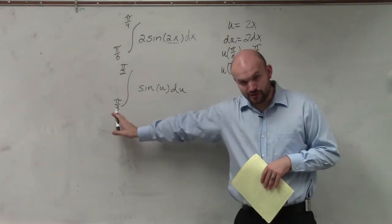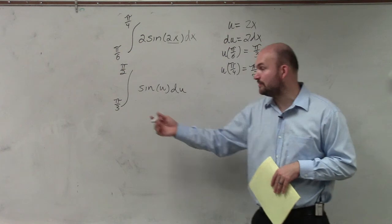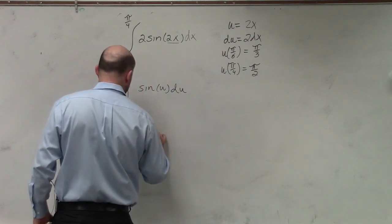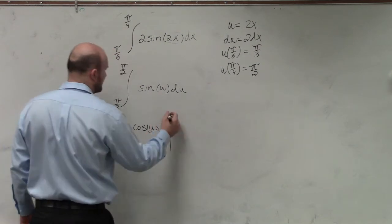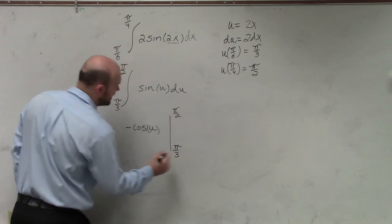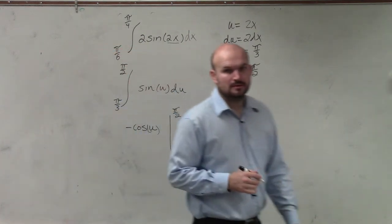Now that everything's in u, in terms of u, it's much easier to integrate here. We can integrate this to negative cosine of u, and then integrate from π halves to π over 3, right?